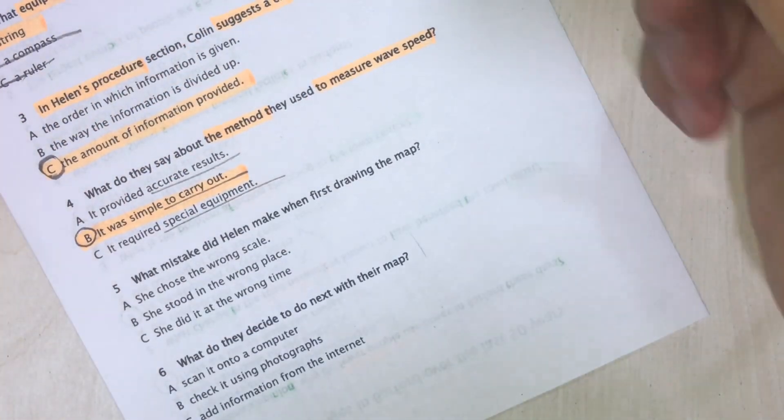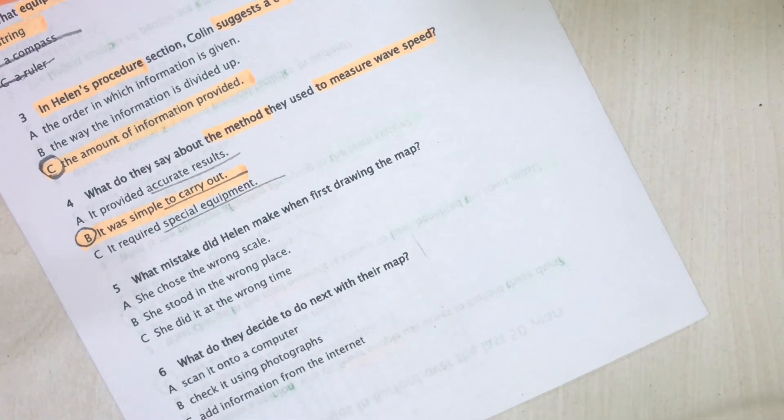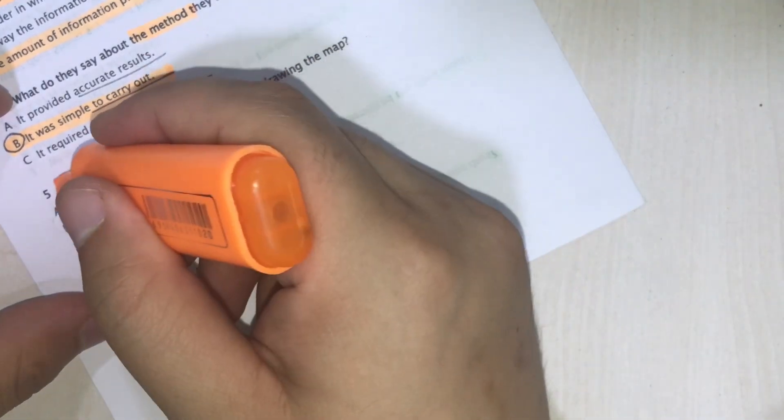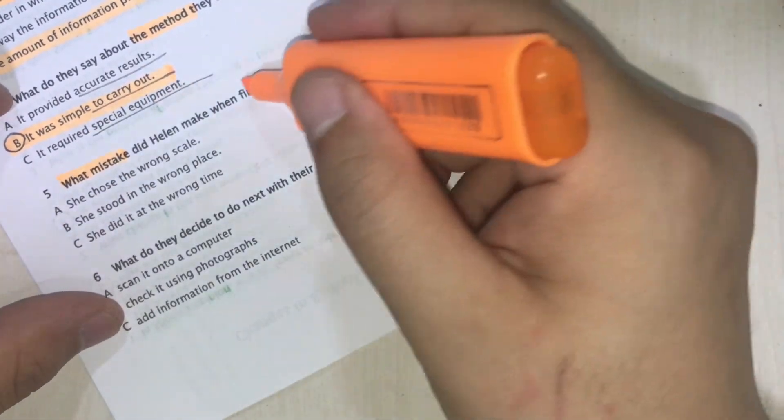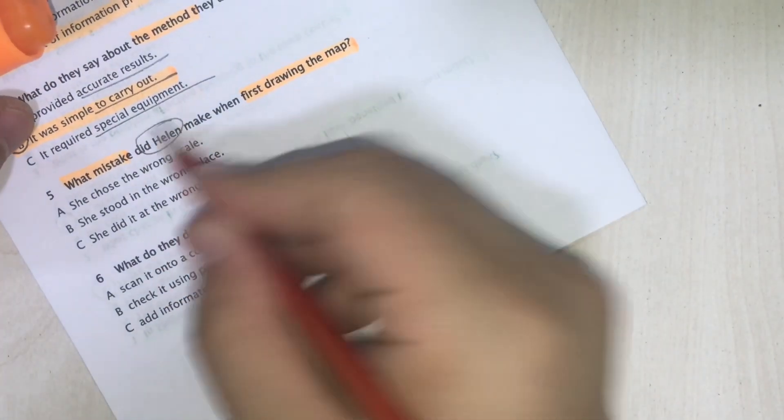Now for this one, what mistake did Helen make when first drawing the map? We have to find a mistake while drawing the map, what Helen did actually.